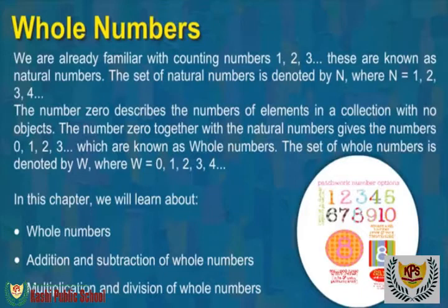We are already familiar with the counting numbers 1, 2, 3, and so on. These are known as natural numbers. The set of natural numbers is denoted by N, where N is equal to 1, 2, 3, 4, and so on.